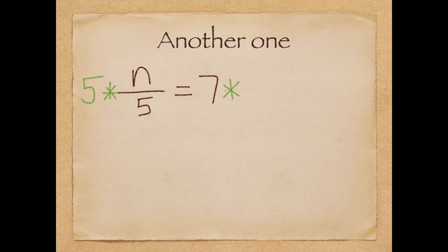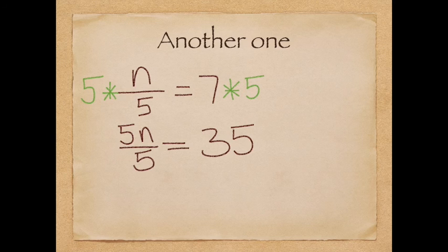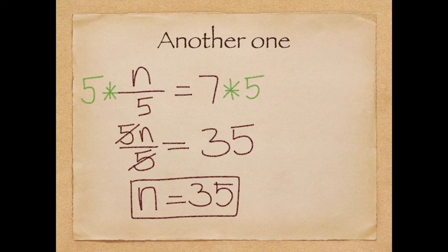So I'm going to multiply by five, because five is the denominator here. And five over five becomes one and seven times five, that becomes 35. So these two fives here are going to turn into one. And I'm just going to get n equals 35.